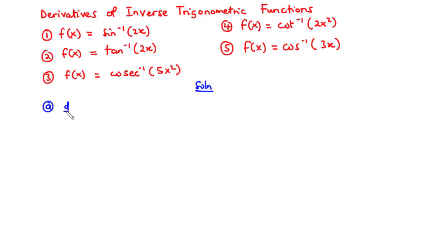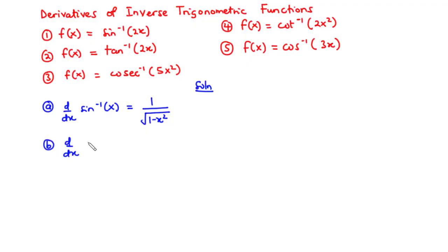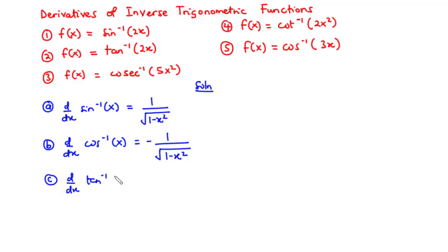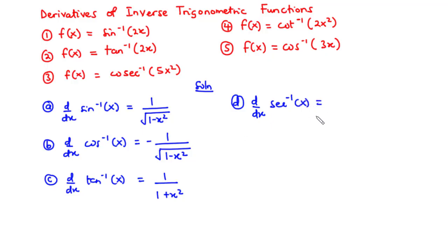A. The derivative of sine inverse of x with respect to x is equal to 1 over the square root of 1 minus x squared. B. The derivative of cosine inverse of x with respect to x is equal to negative 1 over the square root of 1 minus x squared. C. The derivative of tangent inverse of x with respect to x is equal to 1 over 1 plus x squared. D. The derivative of secant inverse of x with respect to x is equal to 1 over the absolute value of x times the square root of x squared minus 1.